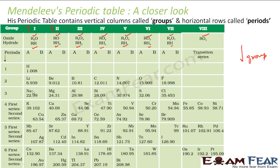In his periodic table, everything is based on atomic mass — hydrogen's atomic mass, and then lithium, beryllium, boron, carbon, nitrogen, oxygen, chlorine — all arranged by atomic mass. Based on their properties, this was the kind of periodic table he found, which was very good with very few limitations.